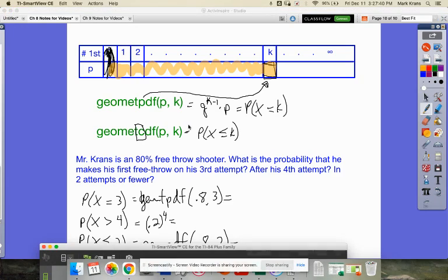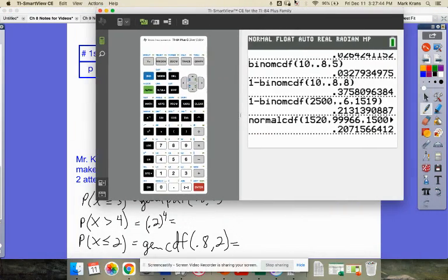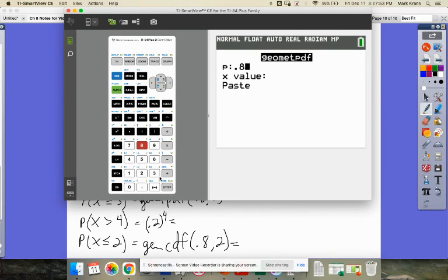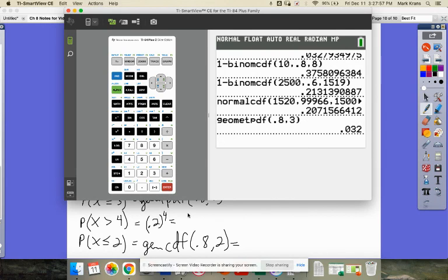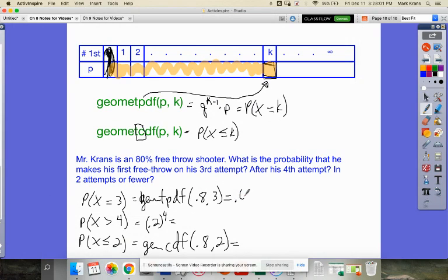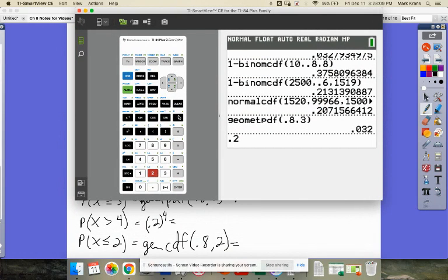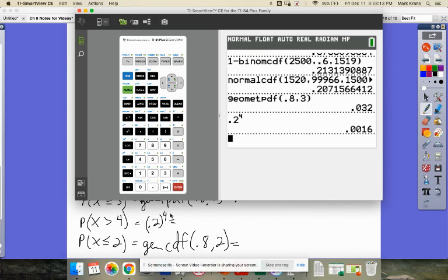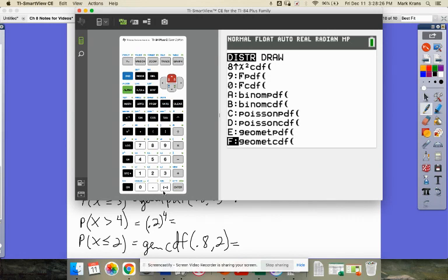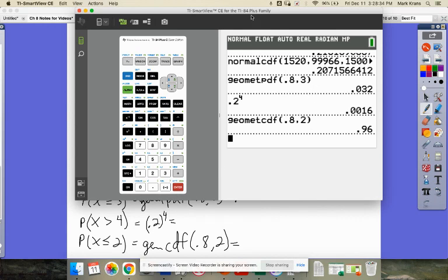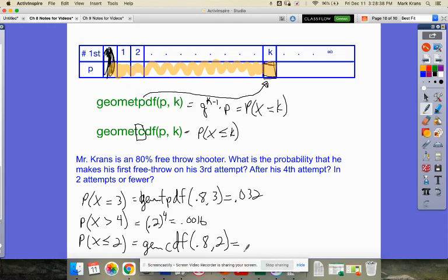So I'm going to grab a calculator real quick and do these three. So the first geom PDF, 0.8 and three. So second distribution, geom PDF, 0.8 and three. And we get a probability of 0.032. You could verify with this formula that it comes up the same. 0.2 to the fourth. Probability that I miss my first four and have a success sometime after that is very slim, 0.0016. Probability that my first make is within my first two shots. Geom CDF, my probability is 0.8. And the probability that I have my first success in my first two shots is 96%. So this is 0.0016 and this is 0.96.